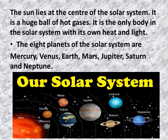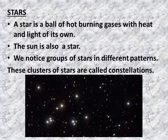You can see here in the picture how our Solar System looks like. Now let us learn about the Stars. A star is a ball of hot burning gases with heat and light of its own. The Sun is also a star. We notice groups of stars in different patterns. These clusters of stars are called constellations. Whenever we see a group of stars in the sky at night, that is called a constellation, which is of different size and different patterns.